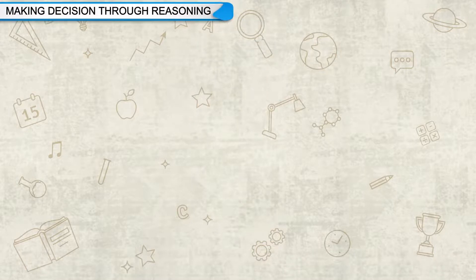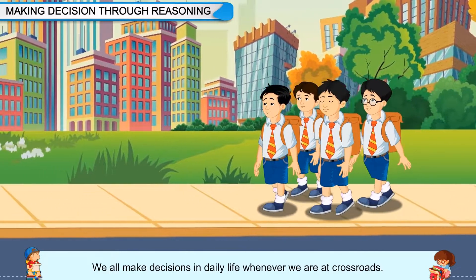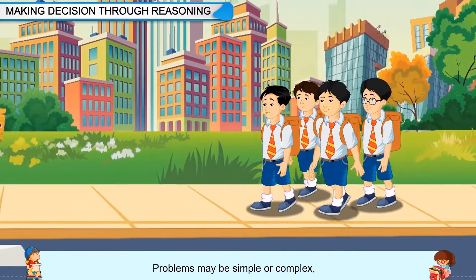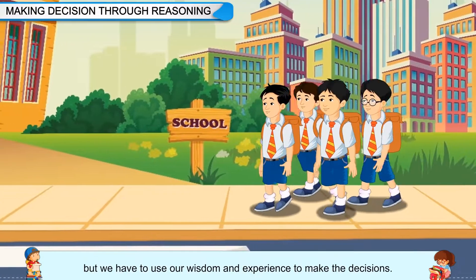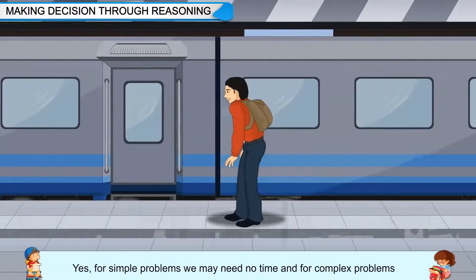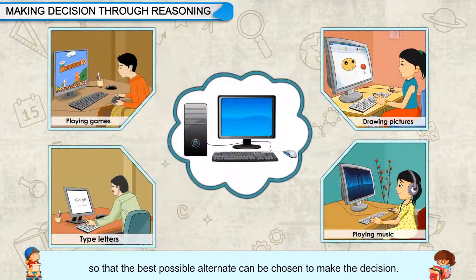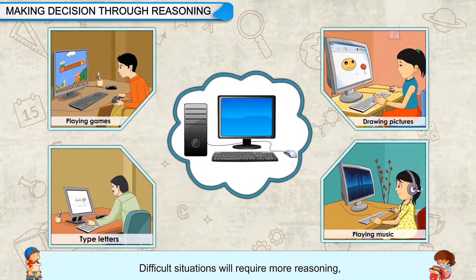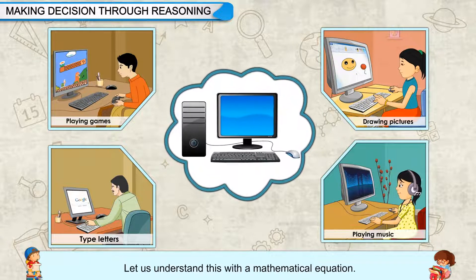Making Decisions Through Reasoning: We all make decisions in daily life whenever we are at crossroads. Problems may be simple or complex, but we have to use our wisdom and experience to make decisions. For simple problems we may need no time, and for complex problems we may need more time so that the best possible alternative can be chosen. Difficult situations will require more reasoning and experience to solve problems.